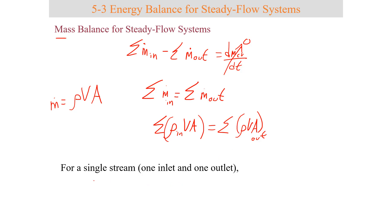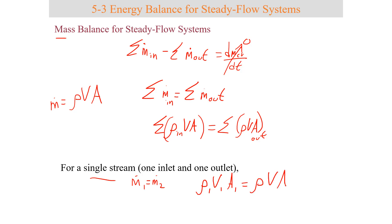For a single stream — meaning one mass flow in and one mass flow out — the mass flow rate in equals the mass flow rate out. In terms of ρVA, the density times velocity times area in has to equal the density times velocity times area out.